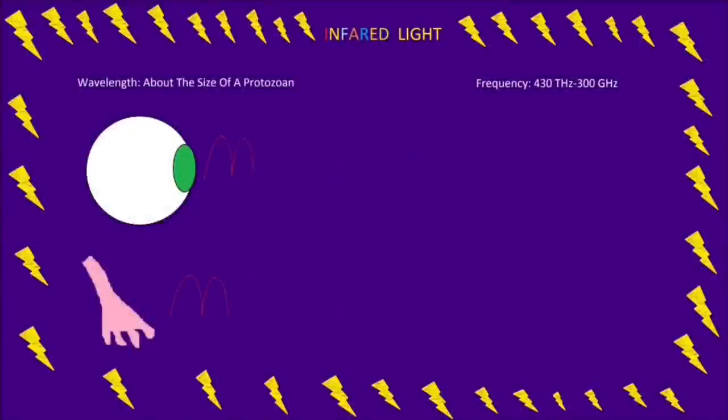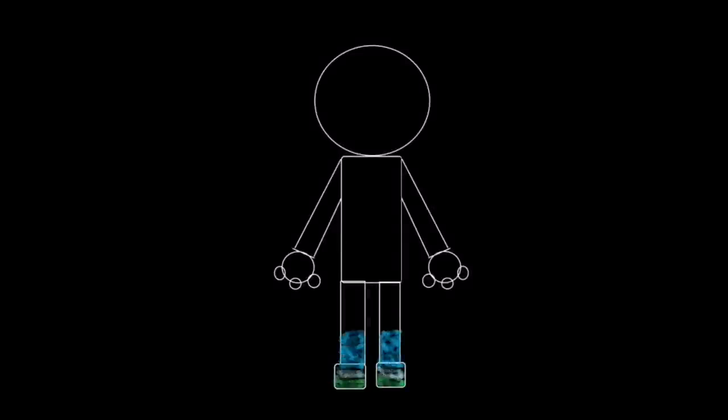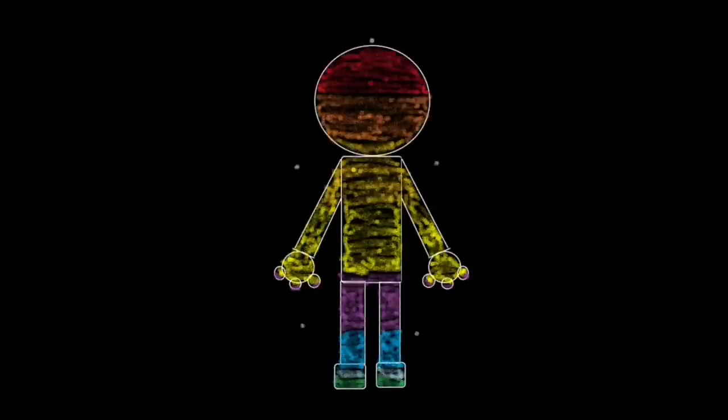Next up we have infrared light. What's special about infrared light is, while you can't see it, you can feel it. Also, infrared light is just like visible light because it can be focused and reflected. Infrared light is the type of light thermal cameras use since anything that contains thermal energy emits infrared light.